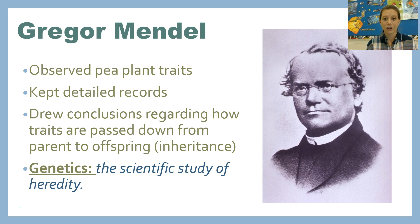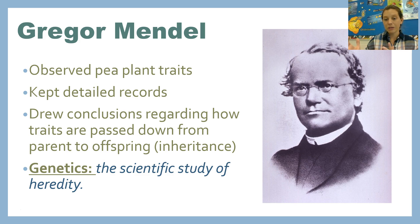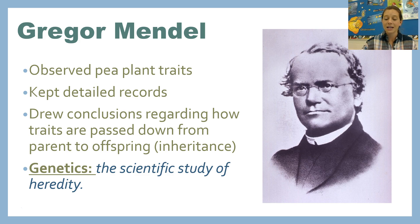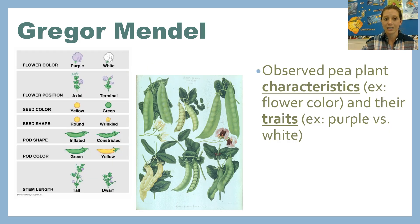Gregor Mendel was working in the gardens of the monastery, observing pea plant traits and keeping detailed records. By studying the parent pea plants and the offspring pea plants, he was able to draw conclusions regarding how traits are passed down from parent to offspring, which we now call inheritance. The term we use to describe this study of inheritance is genetics — the scientific study of heredity, how traits are passed from one generation to the next.